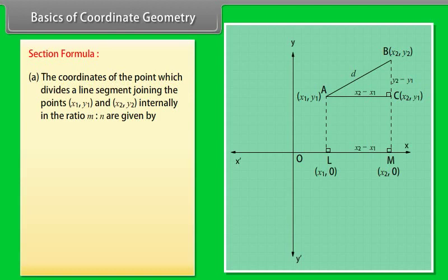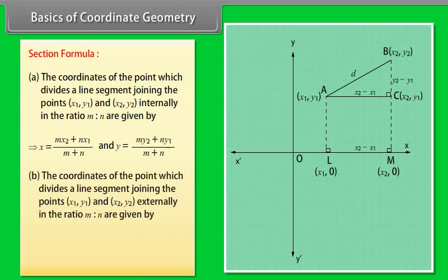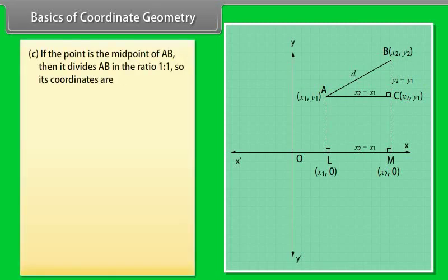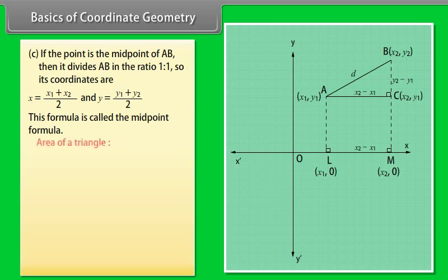Section Formula: The coordinates of the point which divides a line segment joining the points (X1, Y1) and (X2, Y2) internally in the ratio M to N are given by the section formula. The coordinates of the point which divides it externally in the ratio M to N are also given. If the point is the midpoint of AB, then it divides AB in the ratio 1 to 1, so its coordinates are X equals (X1 plus X2) by 2 and Y equals (Y1 plus Y2) by 2. This is called the midpoint formula.